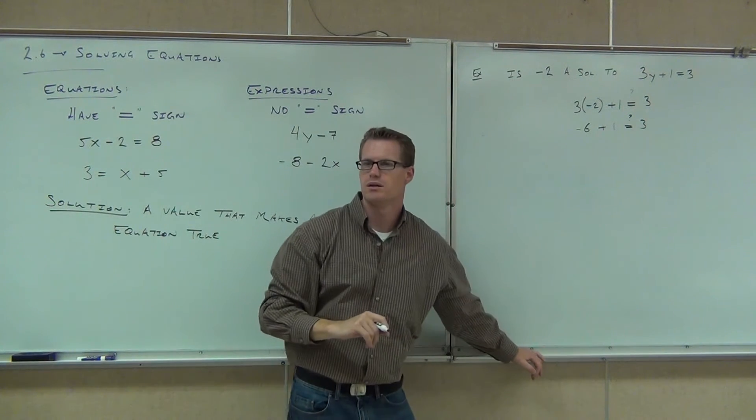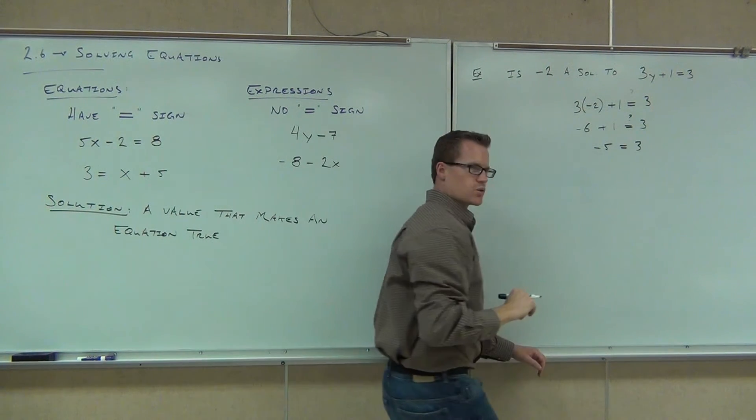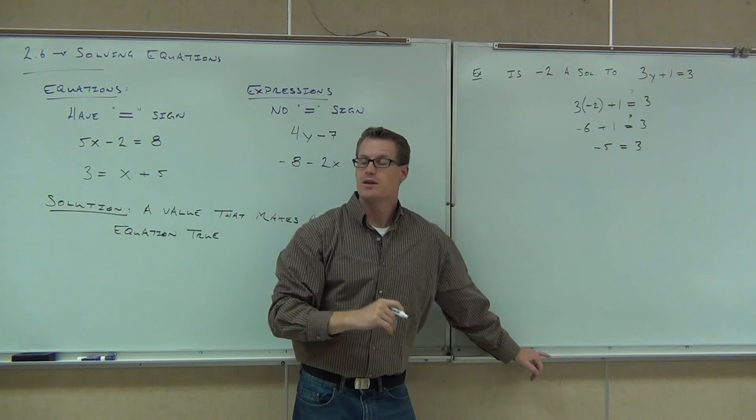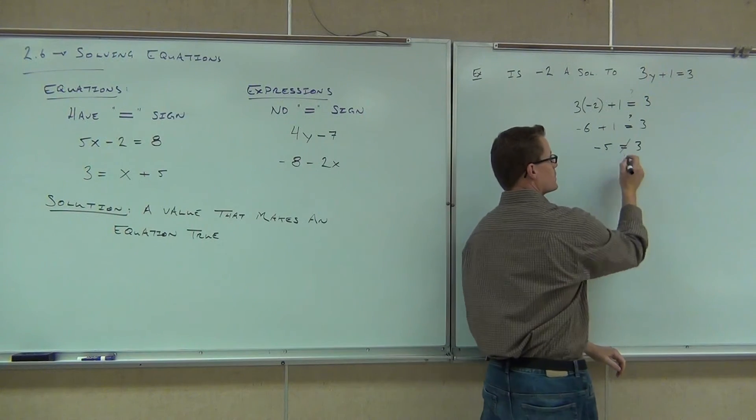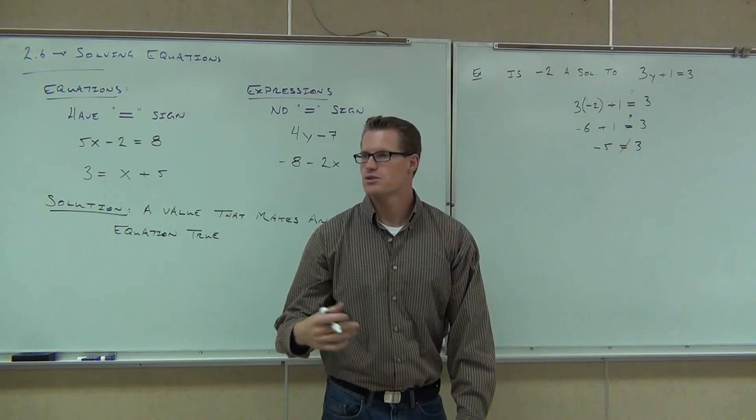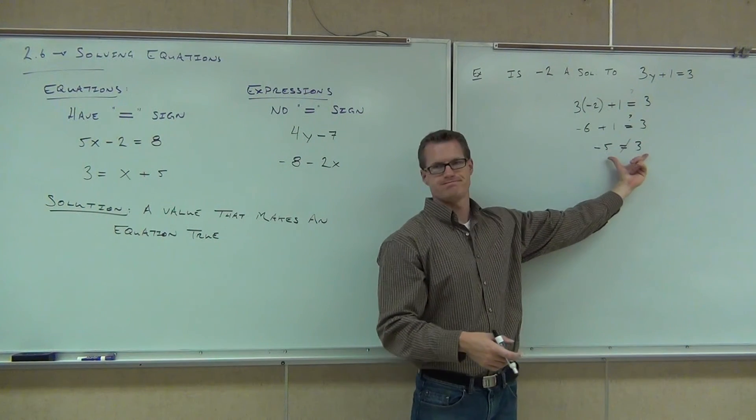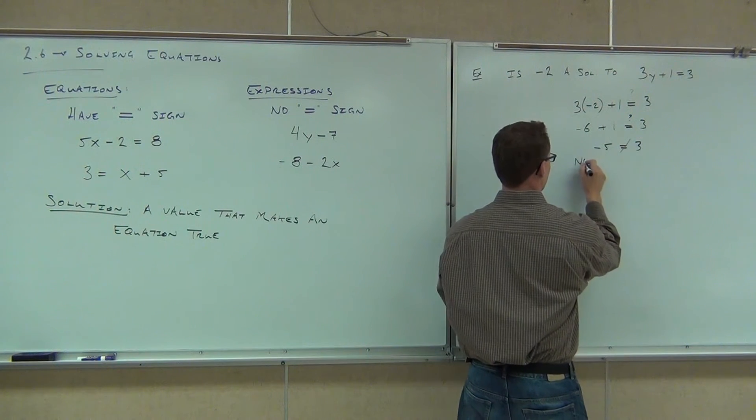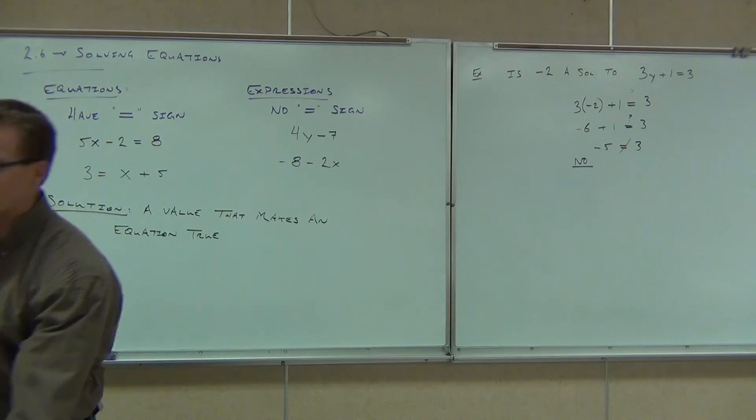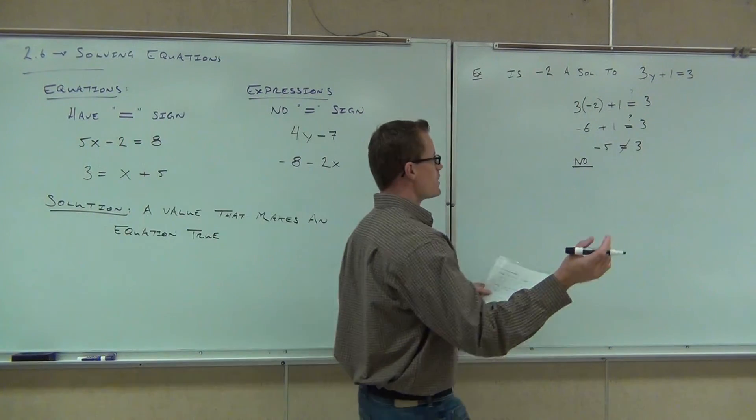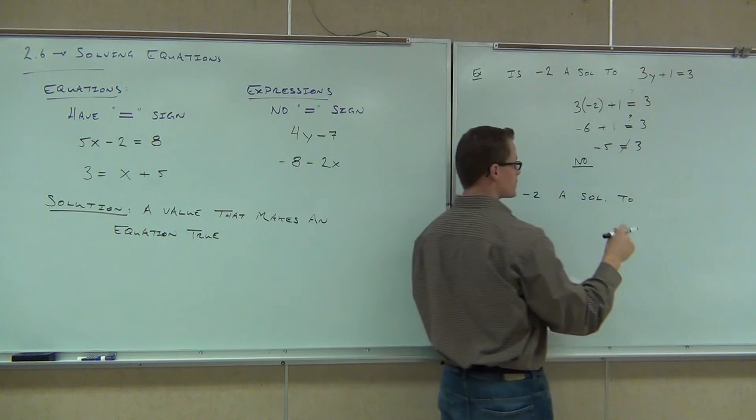And we're still checking if that's true. How much is negative 6 plus 1? Negative 5. Good. Is that a true statement? Is negative 5 equal to 3? No. Then what you do, if you check this, and it comes out that, wait a minute, that doesn't make sense, what we do is put a line through the equal sign saying that's not equal, and then we answer the question. Is negative 2 a solution to this equation? No. The answer is no. Definitely not.